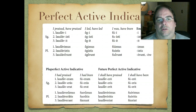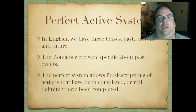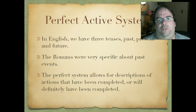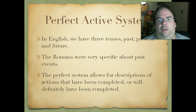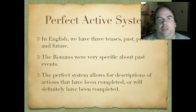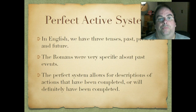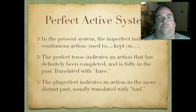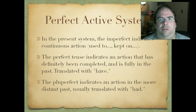So we've got these three new tenses: perfect, future perfect, pluperfect. In English, we really just have three main tenses — things either happen in the past, the present, or the future. The Romans were very much interested in the past and being able to describe things very accurately. The perfect system allows for descriptions of things that have been completed in the past or will definitely have been completed. Remember, we're not talking about hypotheticals — these are definitely things that have either happened, or in the case of future perfect, haven't happened yet but definitely will.